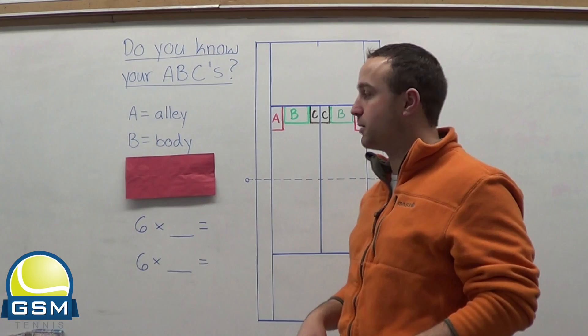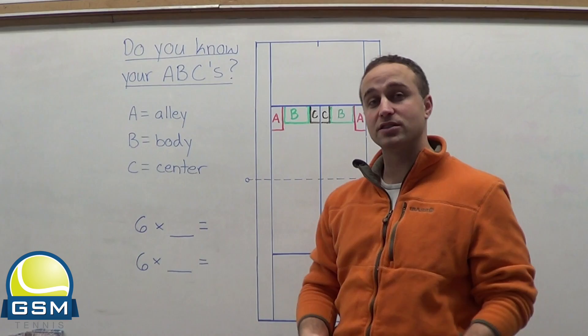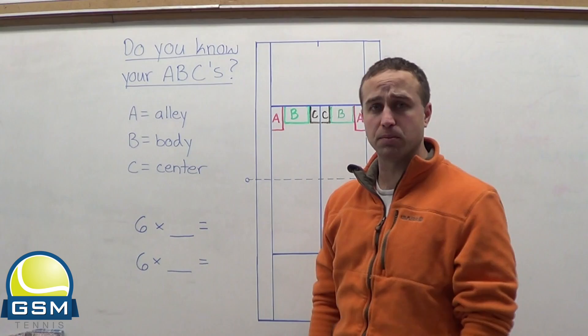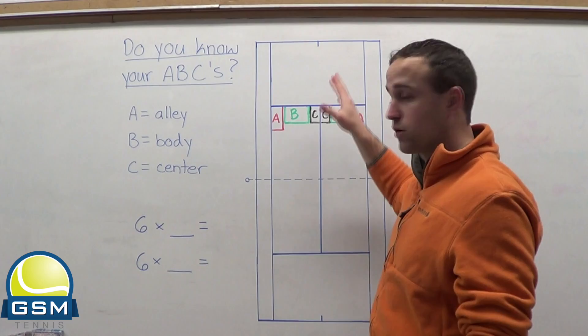Go right at those hips. And then the last serve you need is actually C, which stands for center. So we got alley, body, and center. And the center serve is really simple. That's just where you aim right down the center of the entire court in that service box.